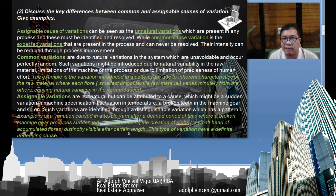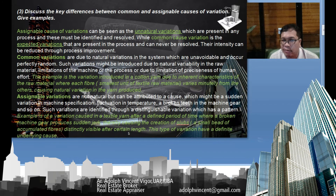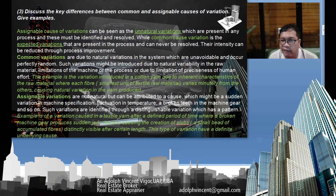For the third question — what are the key differences between common and assignable causes of variation? Assignable causes of variation are unnatural variations present in any process, while common causes of variation are due to natural variations in the system, which are unavoidable and occur perfectly at random.